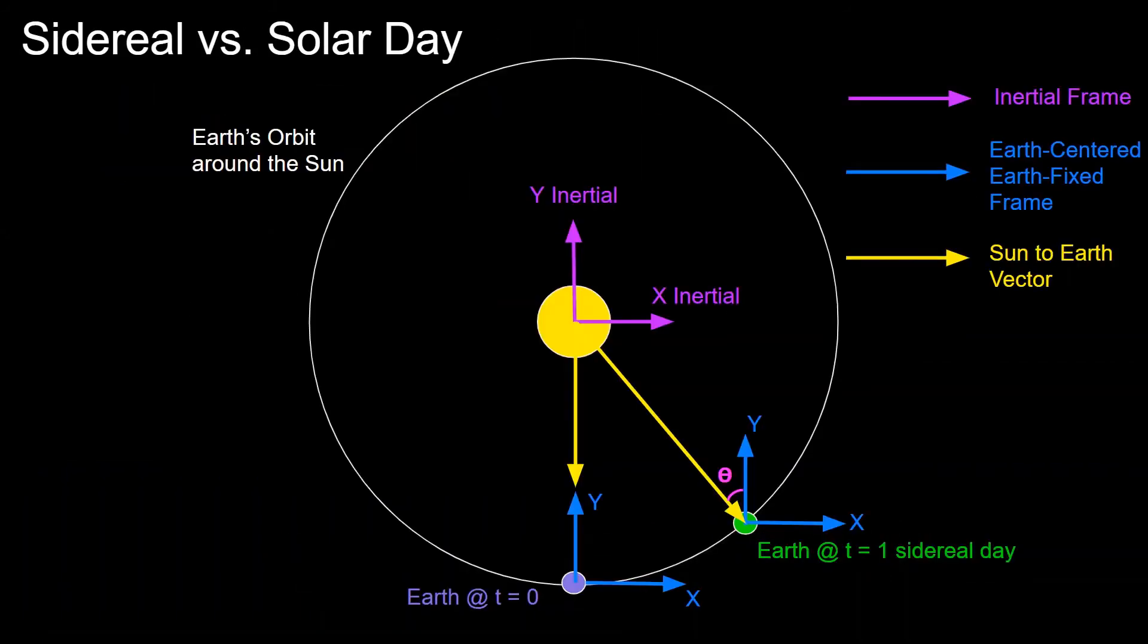Now let's take a look at the difference between a sidereal day and a solar day. In this diagram, we have the Sun at the center and we have Earth's orbit around the Sun represented as that circle. We have some inertial frame where the xy-axis align with the horizontal and vertical of the screen. We have the Earth-centered Earth-fixed frame in blue, which at the two instances of Earth are also pointed in that same direction. And then we have these two Sun-to-Earth vectors which point from the center of the Sun to the Earth at any given time.